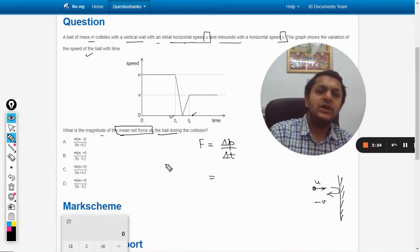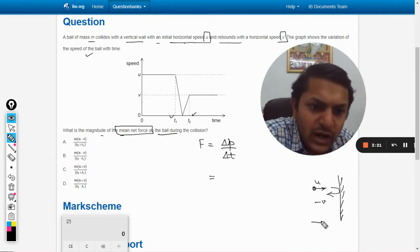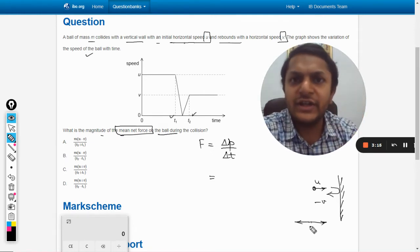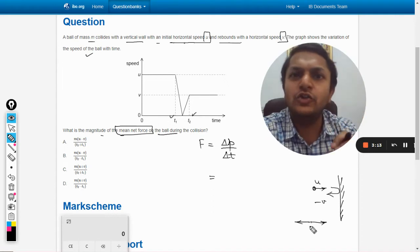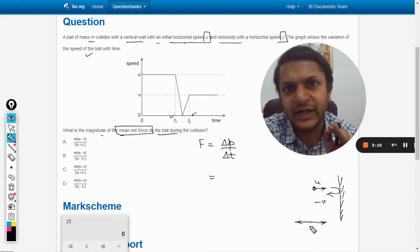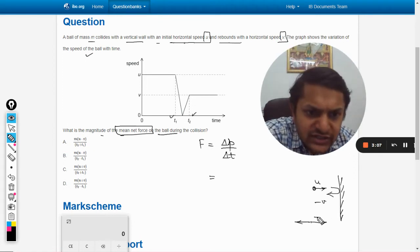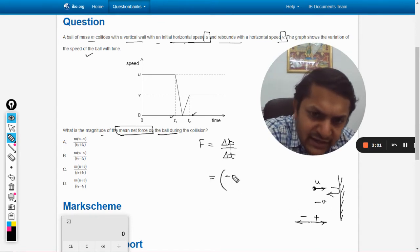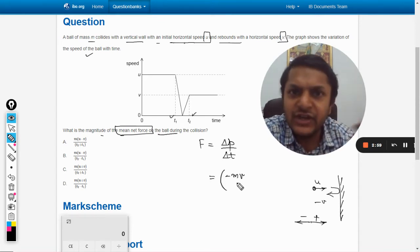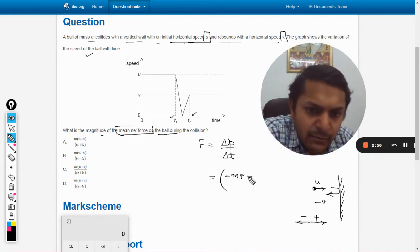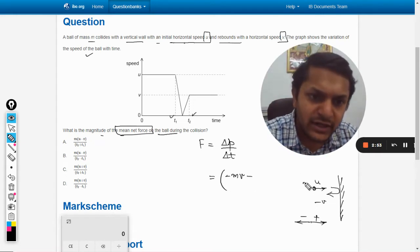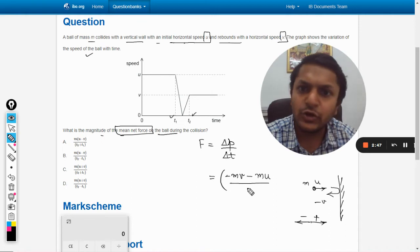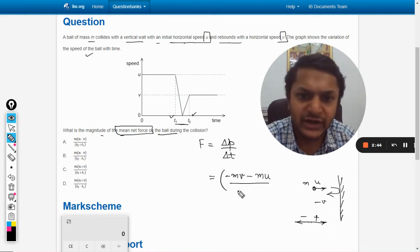On the ball, we have to choose one direction as positive and another direction as negative. Assigning the signs to the directions is purely dependent on you. You can choose any direction to be positive and any direction to be negative. We choose this direction as positive and this as negative. The final momentum is minus mv because it is in the left direction, minus the initial momentum which was mu, divided by the total time t2 minus t1 according to the graph.